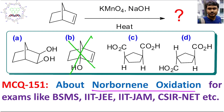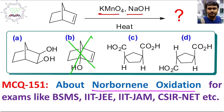Now the question is: what other options are possible? In this case, if you look very closely, KMnO₄ with sodium hydroxide and heat — it is not dilute KMnO₄, it is concentrated KMnO₄ under relatively drastic conditions. So it will not stop at the diol stage. Further oxidation from the diol will happen, and ultimately it produces dicarboxylic acid — one carboxylic acid on each side.